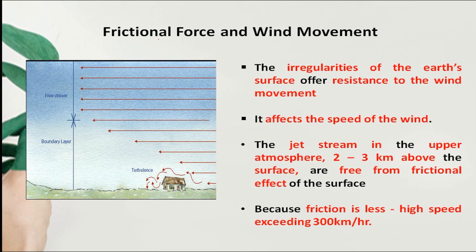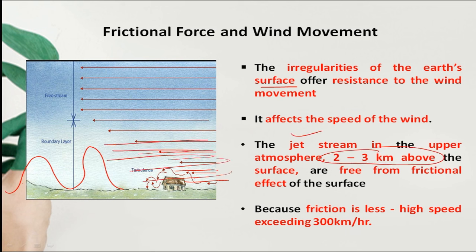The speed of jet streams is very high because they occur at very high altitude. Surface winds experience a lot of resistance from mountains and terrain, which reduces their speed. But jet streams are 2-4 km up, so the friction effect is reduced, allowing speeds of 300-400 km per hour.